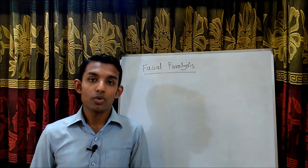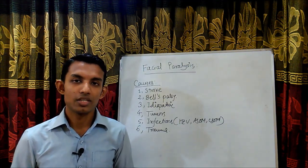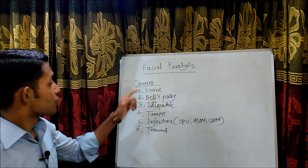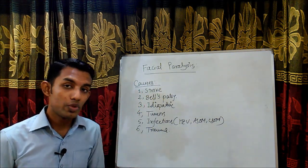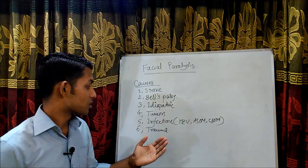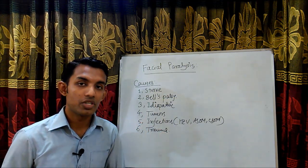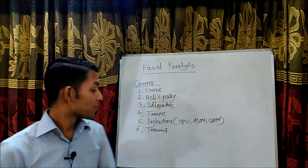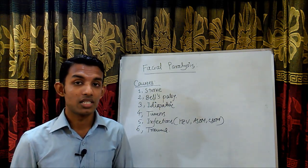The causes of facial paralysis include: number one, stroke; then Bell's Palsy; idiopathic causes; tumors; infections like herpes zoster virus infection; acute suppurative otitis media and chronic suppurative otitis media; and also trauma. So these are the causes of facial paralysis.